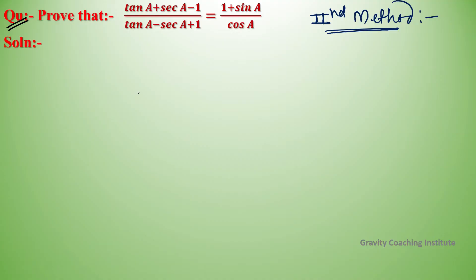Second method: In the second method, we will first convert the T-ratios in the LHS into terms of sin and cos. So tan A can be written as sin A upon cos A, and sec A as 1 upon cos A.